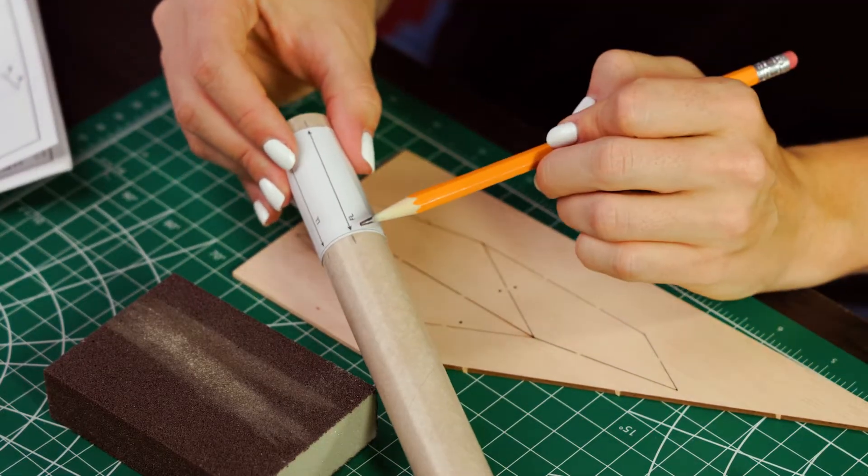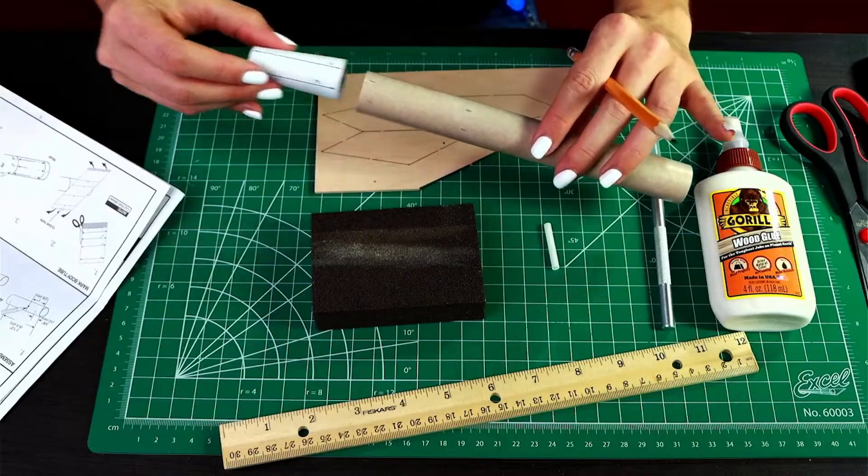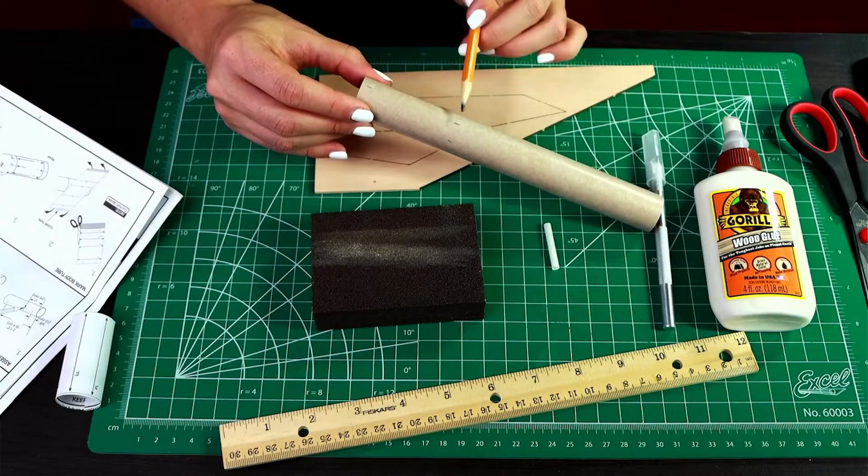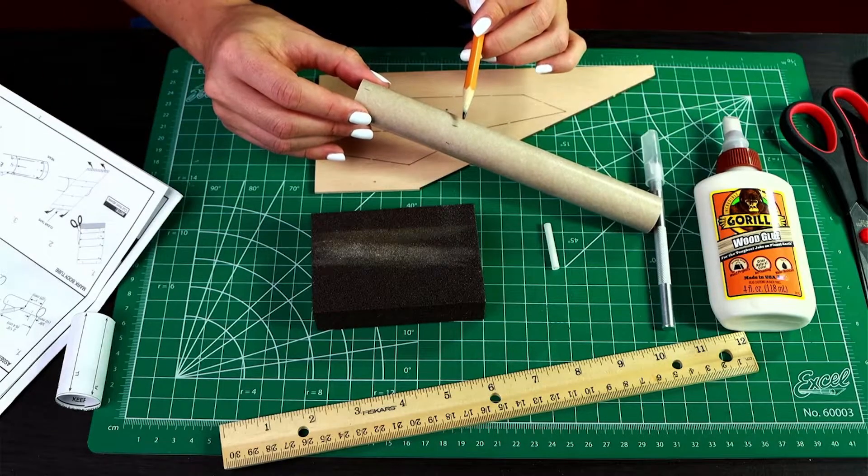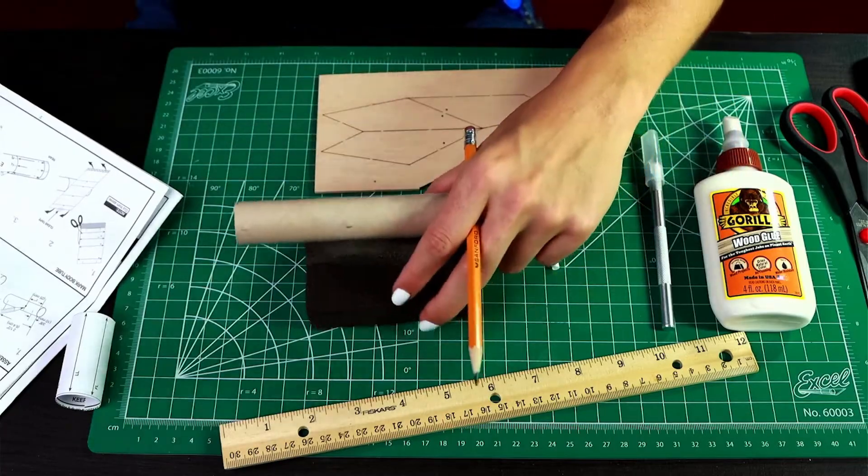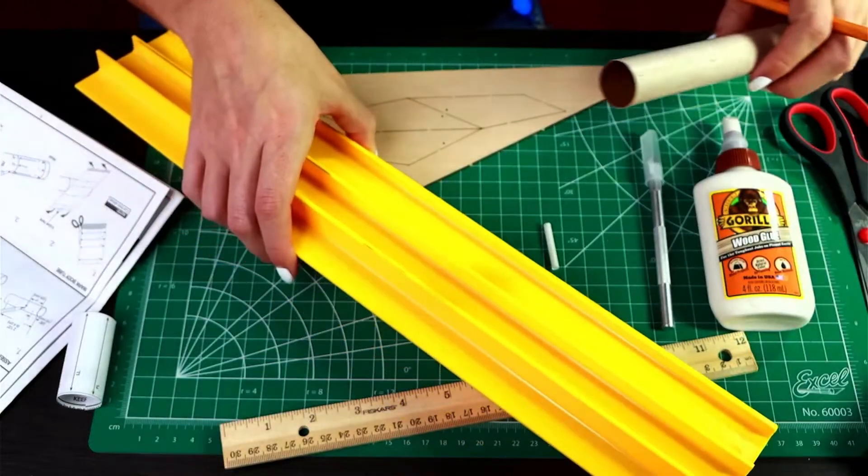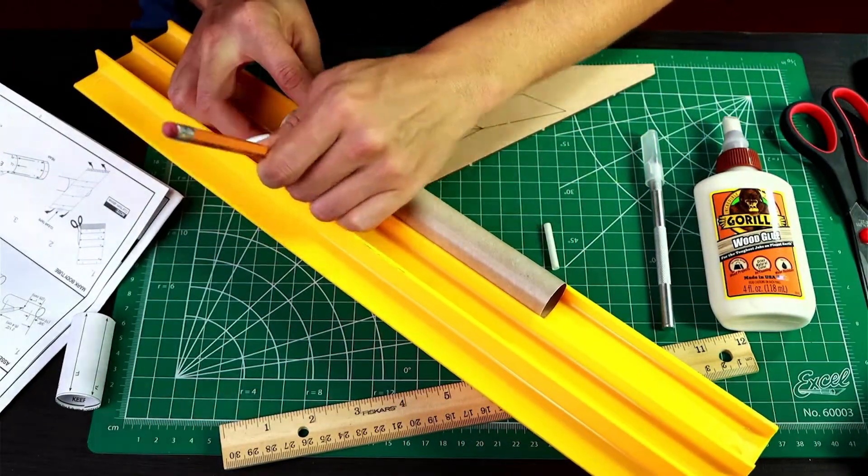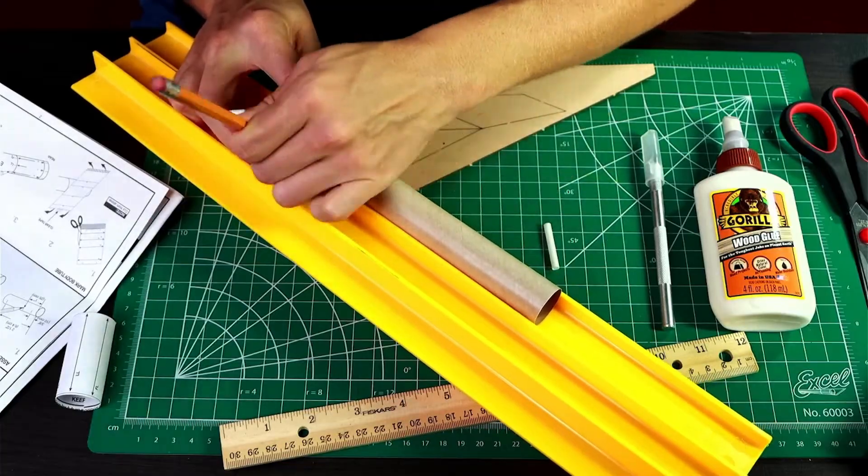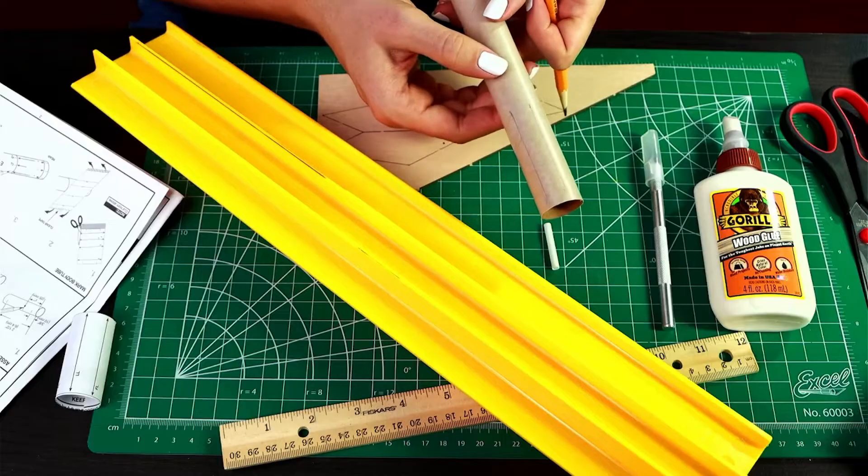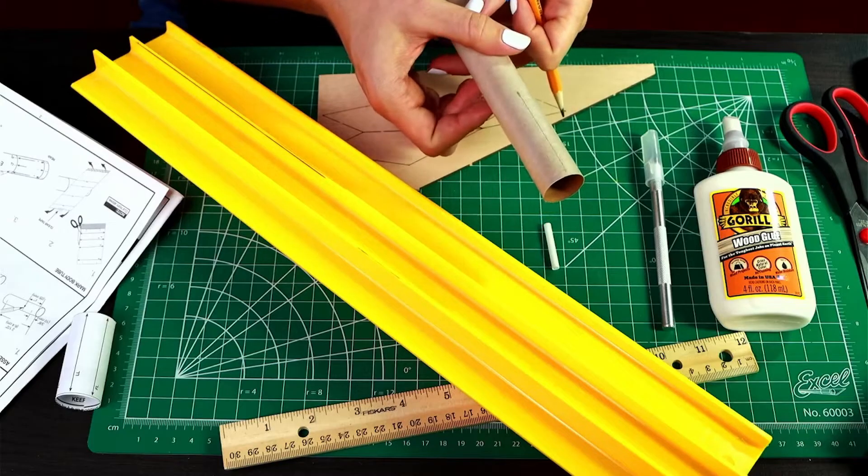Next, we want to extend these lines, so you can remove your marking guide. We just want to use a straight edge to make these lines really straight. You can either use a door frame, a ruler as a straight edge, or I'm going to use this tube marking guide. Now you should have nice straight lines extending up your body tube.